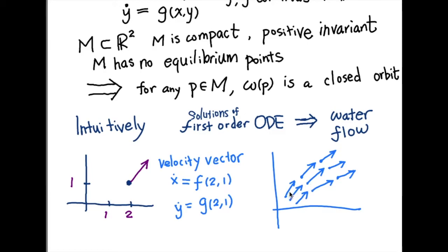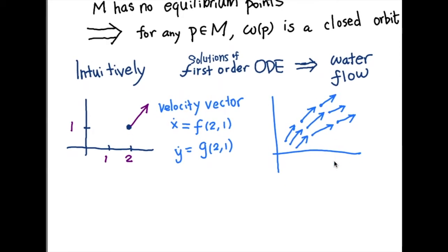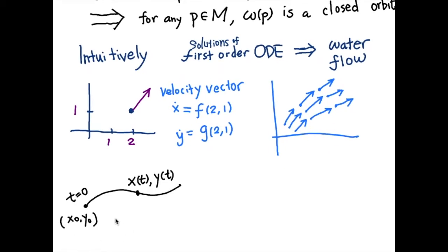Just by drawing these arrows, you can already see the trace of the solution — they are just like a water flow. A solution of a differential equation with initial condition (x0, y0) can also be called a flow starting at (x0, y0). We say we start at point (x0, y0) and then flow to other positions.